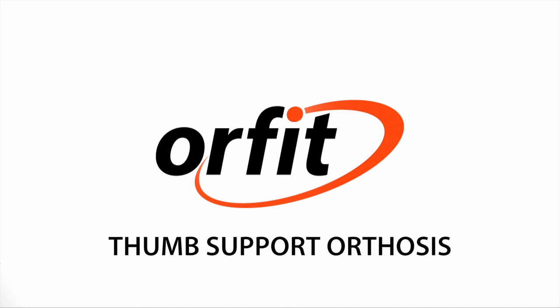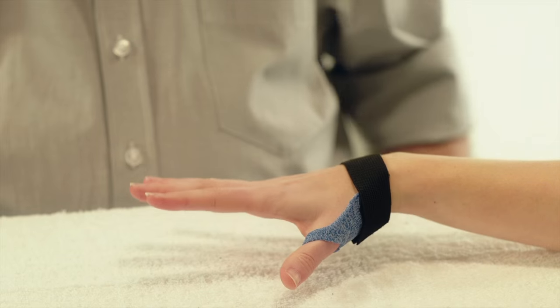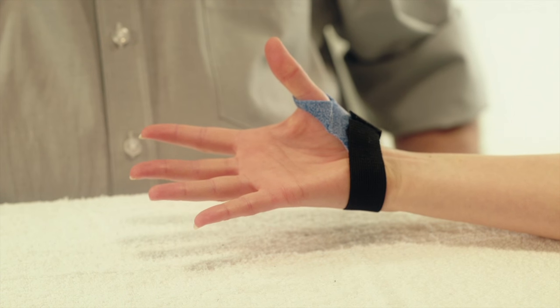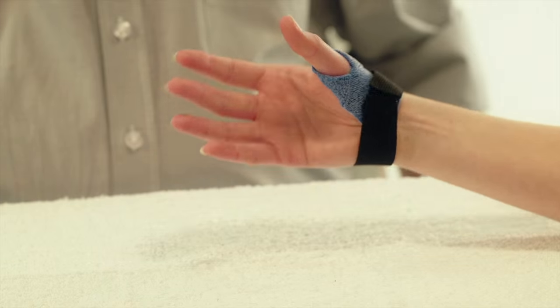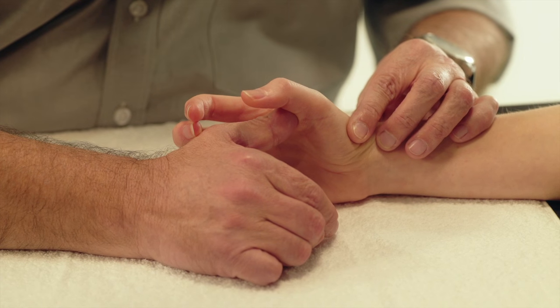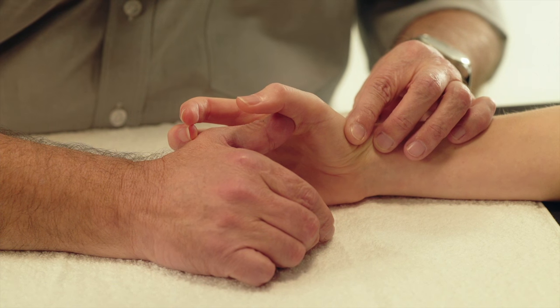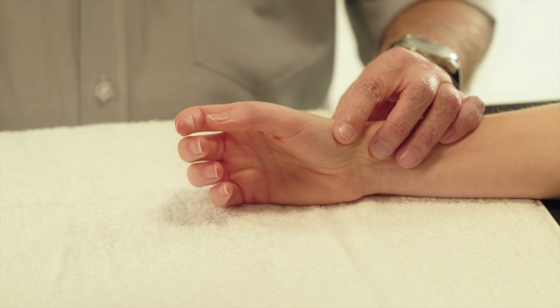Thumb support orthosis. Here we will demonstrate how to make a functional orthosis in case of root arthrosis. The orthosis will exert pressure on the base of the metacarpal bone and bring the thumb in abduction by pushing on the cavity of the first web space.